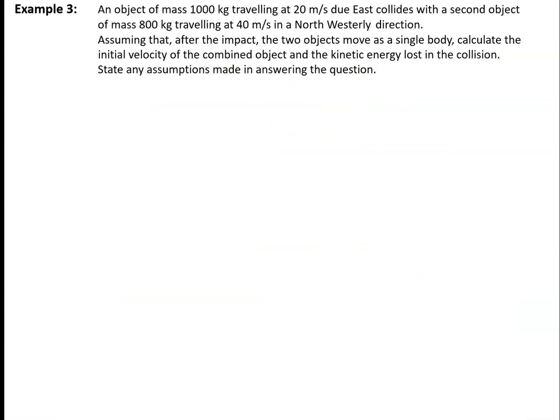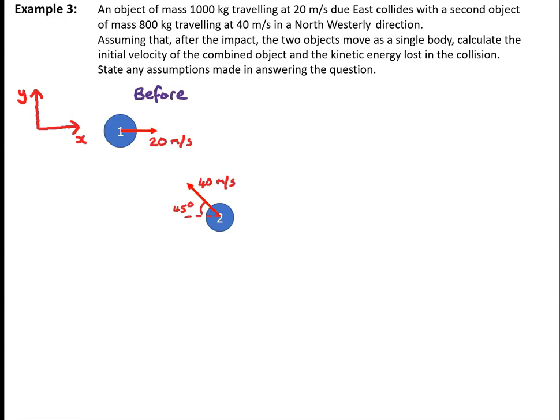As our next example, an object of mass 1,000 kilograms travelling at 20 m/s due east collides with a second object of mass 800 kilograms travelling at 40 m/s in a north-westerly direction. Assuming that after the impact the two bodies move as a single body, calculate the initial velocity of the combined object and the kinetic energy lost in the collision. We start with a diagram: particle 1 moving at 20 m/s due east, particle 2 moving at 40 m/s north-westerly, and after the collision both particles combined moving with velocity v.